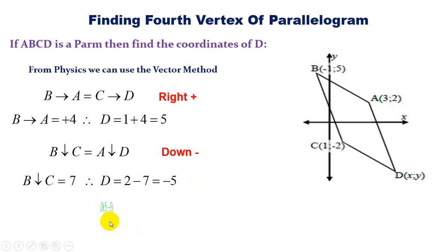And that gives us D being the fourth vertex 5, minus 5. Thank you.